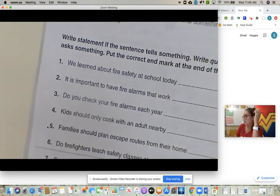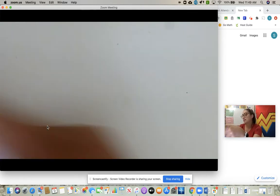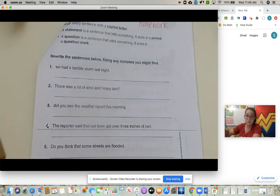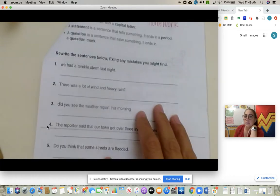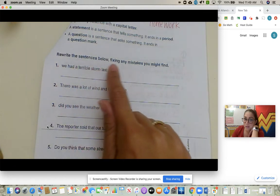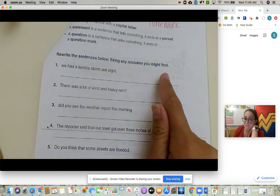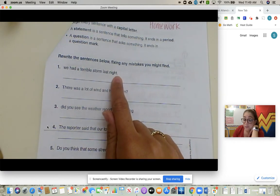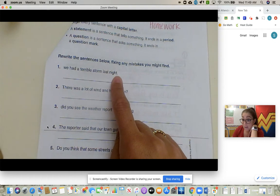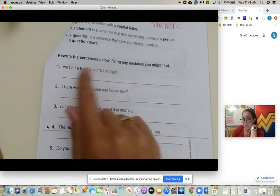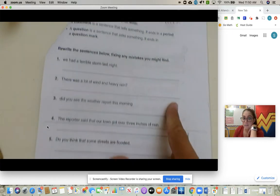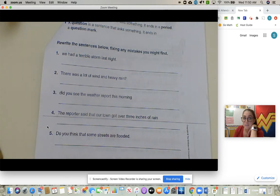And then page four was our homework. So it's a little different. You have to rewrite the sentence below, fixing any mistakes you might find. There's a period already there. You need to decide, is that period correct or do you need a different ending punctuation? Is it a complete sentence? Does it have a capital letter? You need to ask yourself all these questions when you are doing one through five.